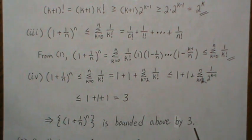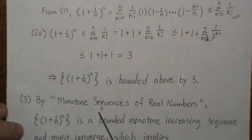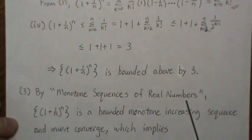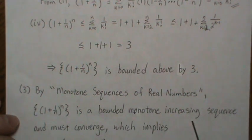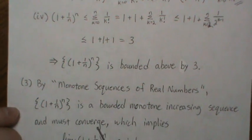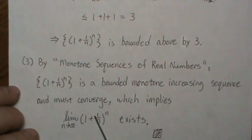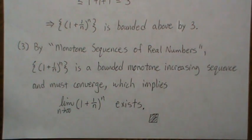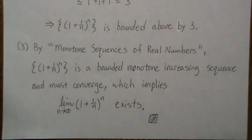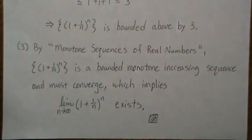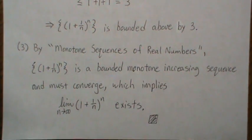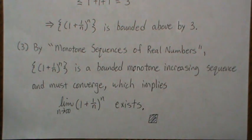So every term in this sequence is less than 3, meaning the sequence is bounded above by 3. Combined with the lower bound of 2, the sequence is bounded between 2 and 3. By the monotone convergence theorem — shown in my separate video on monotone sequences of real numbers — a bounded monotone increasing sequence must converge. Therefore the limit exists. We've shown using sequence theory that it's bounded below by 2 and above by 3 and hence convergent. Other videos will show that this limit equals the famous value e, but we won't tackle that here. Hope you enjoyed it — please like and subscribe!